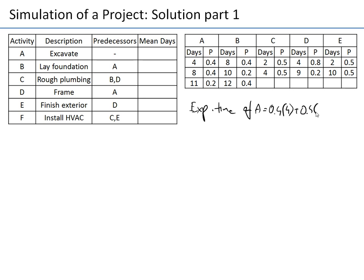The expected time of A equals 0.4 × 4 days plus 0.4 × 8 days plus 0.2 × 11 days, which gives exactly seven days. So we write here: the expected time for activity A is seven days.